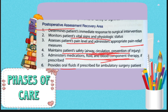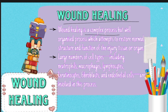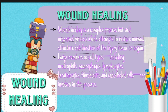The wound healing process is a complex and organized process that can take from a few days to months or even years to heal properly. It goes through defined phases: hemostasis, inflammation, proliferation, and maturation. The main aim of wound healing is to restore the normal structure and function of the organ or area to what it was before the injury. This process involves many cells including WBCs, platelets, neutrophils, macrophages, lymphocytes, keratinocytes, fibroblasts, and endothelial cells.